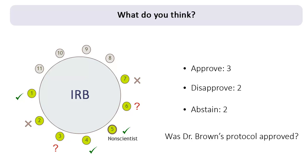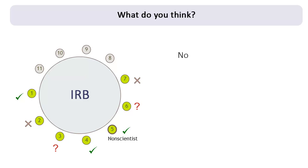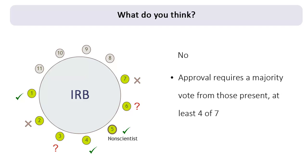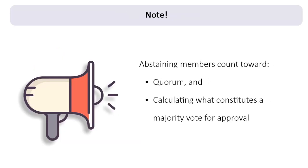Was Dr. Brown's research approved by the IRB? No. According to the regulations, for Dr. Brown's research to be approved by the convened IRB, at least four of the seven members present at the meeting—in other words, the majority of those present—must have voted to approve the protocol. Even though there were more approvals than disapprovals, the research falls short of receiving the approval of a majority of those members present. Remember that members who abstain still count toward quorum and calculating what constitutes a majority vote.